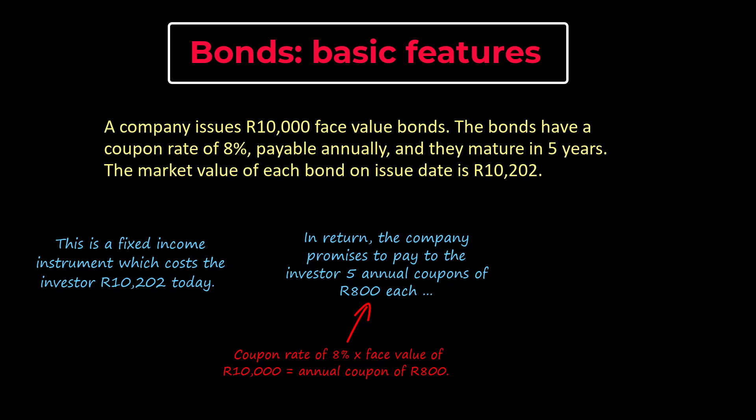We take careful note that this is an annual pay bond, which means that each coupon is paid once a year. There are 5 years to maturity, so there are 5 separate coupon payments by the company to the investor. The company also promises to pay the investor the face value of the bond, which is R10,000, as a single lump sum at the end of the 5 year period. This represents the return of the loan principle.